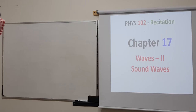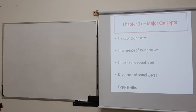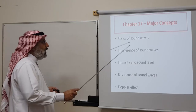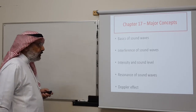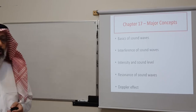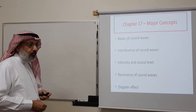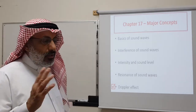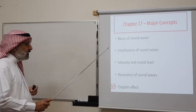Today we have our recitation on Chapter 17, our second chapter on waves, which was dedicated to sound waves. The major concepts we covered include basics of sound waves, definitions, speed of sound, traveling sound waves, interference of sound waves, intensity and sound level, resonance of sound waves in air columns, tubes and pipes, and finally the Doppler effect. Since we discussed two Doppler effect problems in lecture, today I will consider problems on interference, intensity, and resonance.